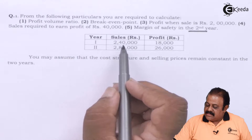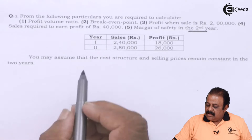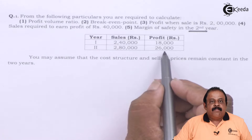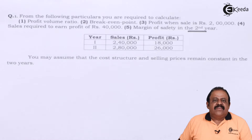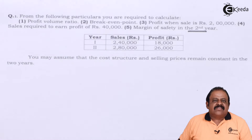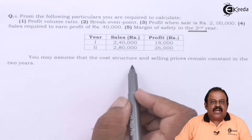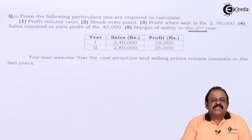In the table, Year 1 sales is ₹2,40,000 and profit is ₹18,000. Year 2 sales is ₹2,80,000 and profit is ₹26,000. This is a sum based on marginal costing where variable cost and fixed cost are not directly mentioned — only sales and profit of two different years are given. You may assume that the cost structure and selling prices remain constant in both years.